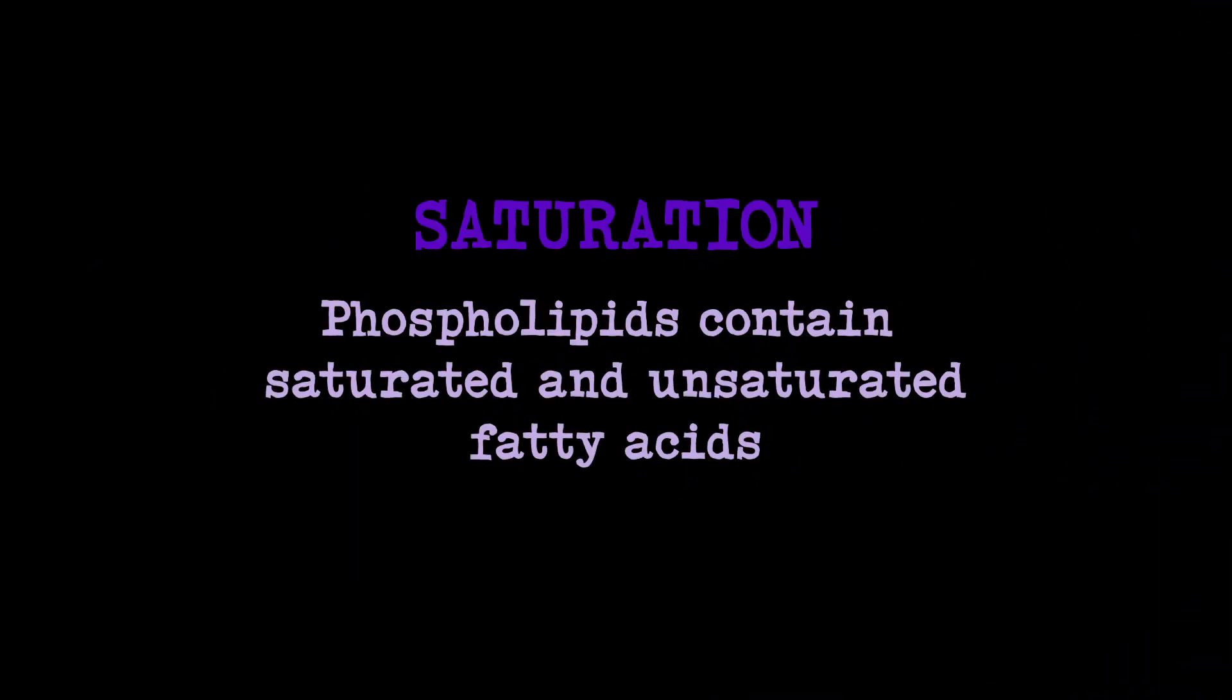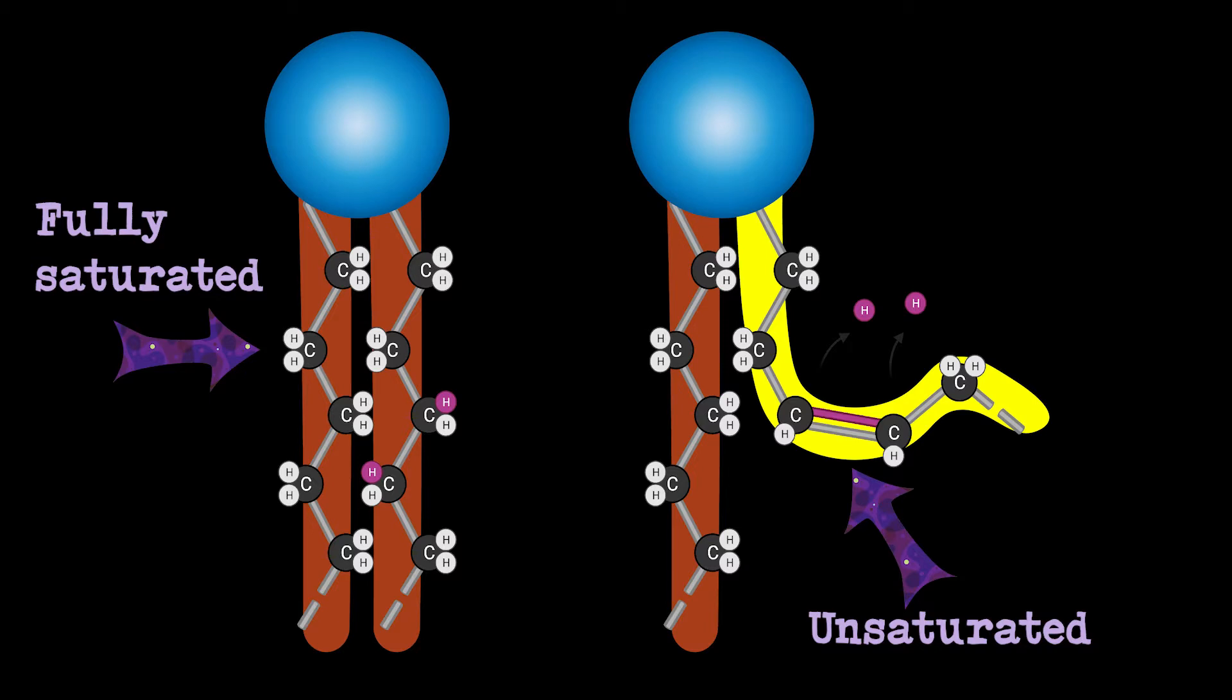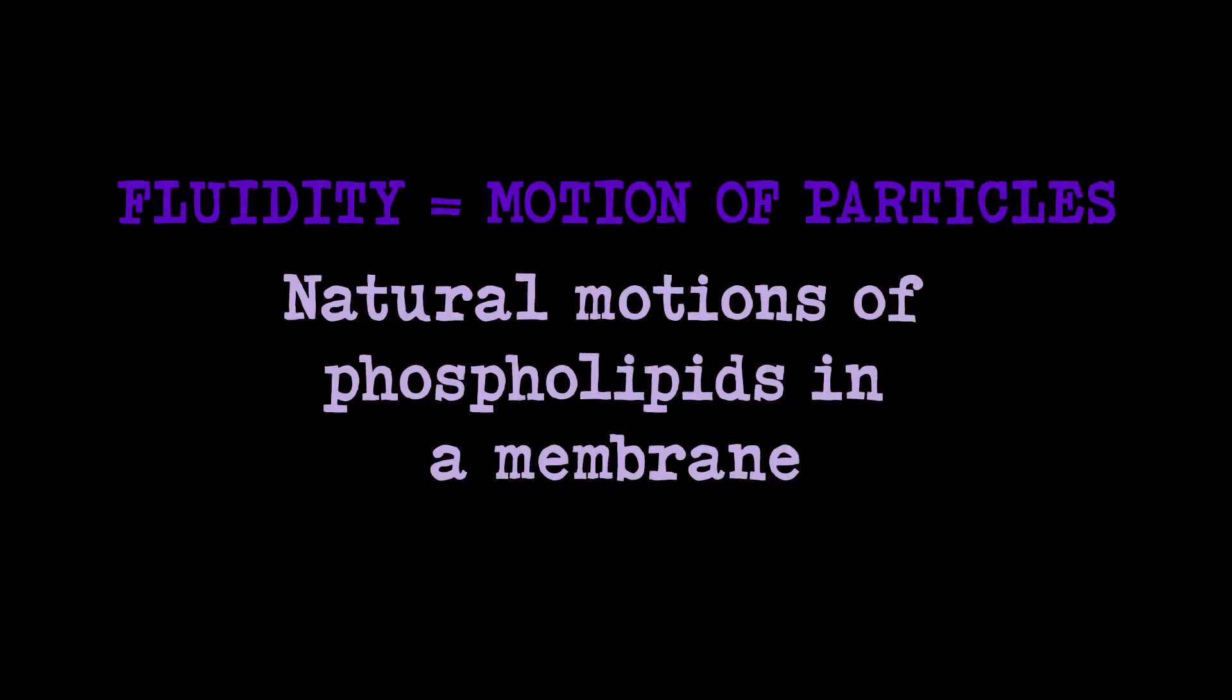The nature of fatty acids making phospholipids also strongly influences membrane fluidity. Indeed, phospholipids contain either saturated or non-saturated fatty acids. The level of saturation has a significant impact on the motion of the particles. There are three types of movements naturally occurring in the phospholipid layers.